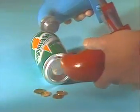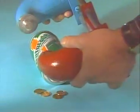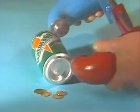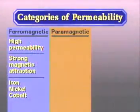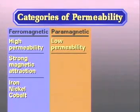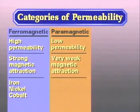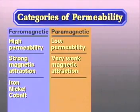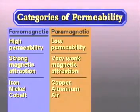Some materials are only very slightly attracted by magnetic fields. Paramagnetic is the term applied to materials that have a low level of permeability. This low permeability causes such materials to have a very weak magnetic attraction. The prefix para can mean partial. Copper, aluminum, and air are paramagnetic materials.